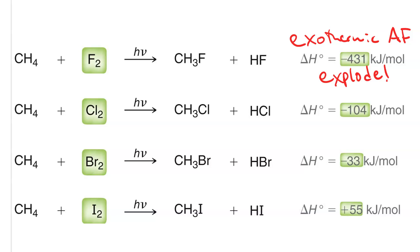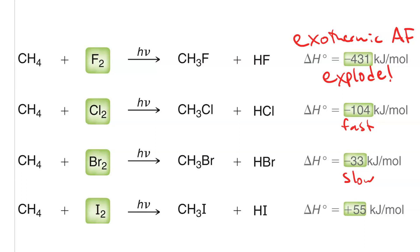Fluorination is way too fast. Bromination is slow. For radical iodination, we get that it's endothermic. So the two that are synthetically useful are chlorination and bromination.